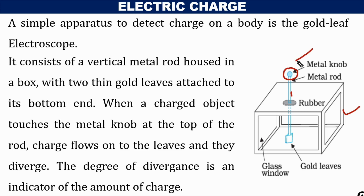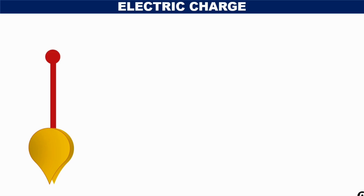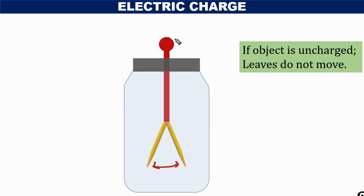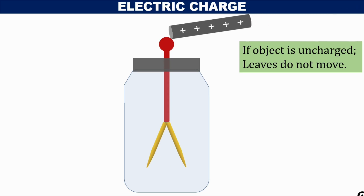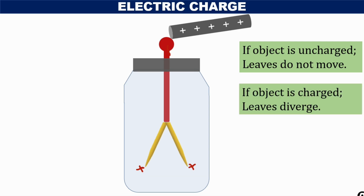If any charged object is brought near the metal knob, the degree of divergence of the gold leaves will indicate the amount of charge. When an uncharged object contacts the metal knob, the angle of divergence between the two gold leaves will not change. On the other hand, when a charged object contacts the metal knob, the charge is transferred to the metal rod and then to the gold leaves. Due to the force of repulsion between like charges on the leaves, the angle of divergence increases.